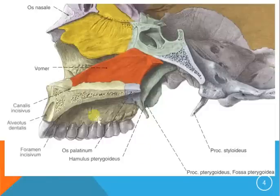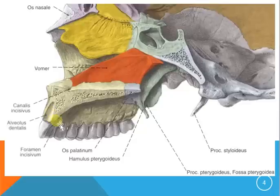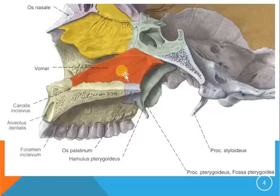This is the inner part of the maxilla. An important canal is the canalis incisivus right here, which opens into the foramen incisivum. Here passes the nerve, artery, and vein that supply blood to the anterior teeth. With the red color is shown the vomer — a single bone that makes up the septum of the nasal cavity.